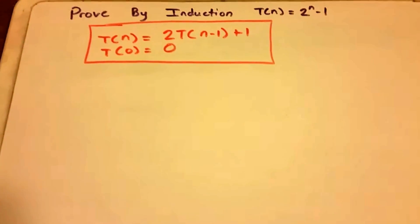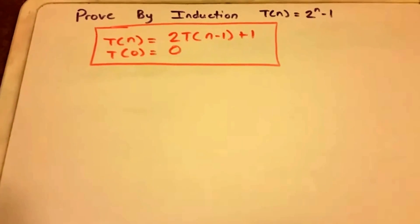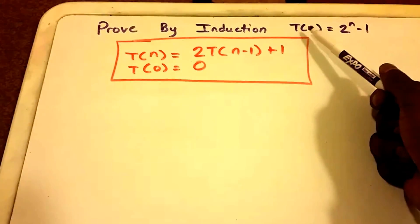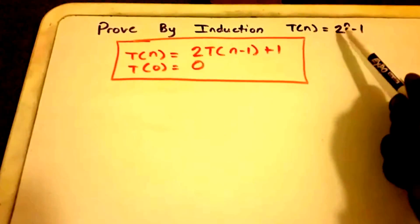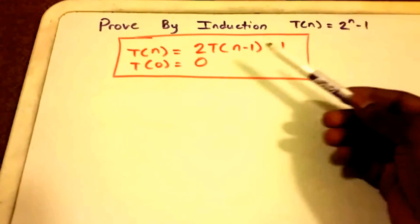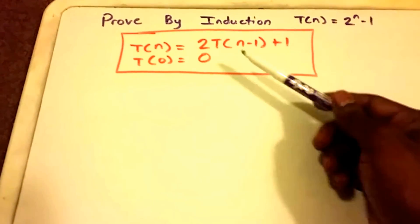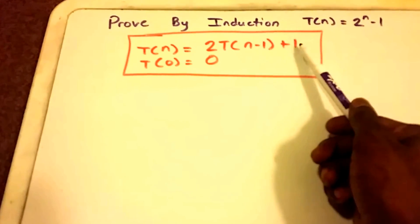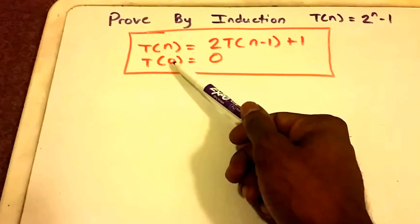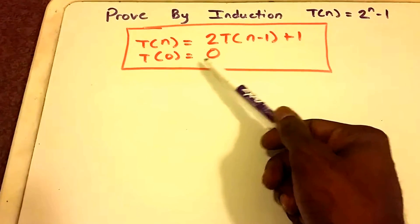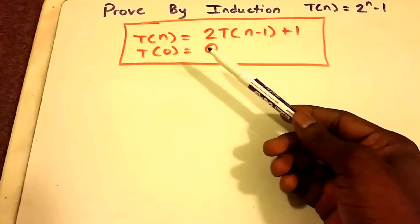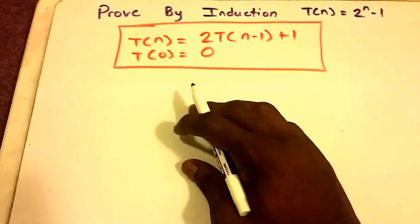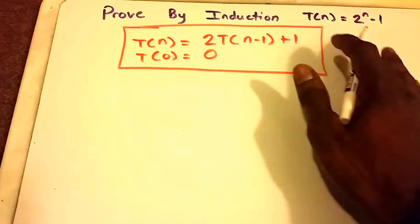Welcome to this video on an induction proof. We want to prove by induction that the recurrence T(n) equals 2 to the power of n minus 1. Our recurrence in orange says T(n) equals 2 times T(n-1) plus 1, with base case T(0) equals 0. This is actually the recurrence for the Tower of Hanoi.